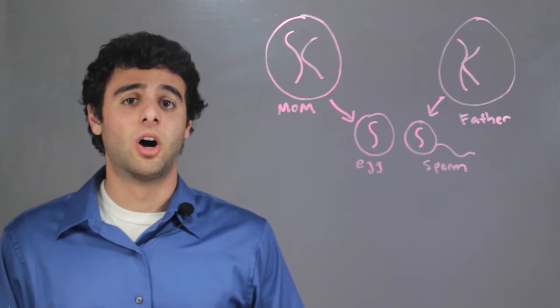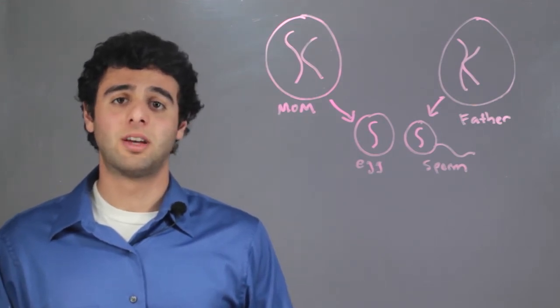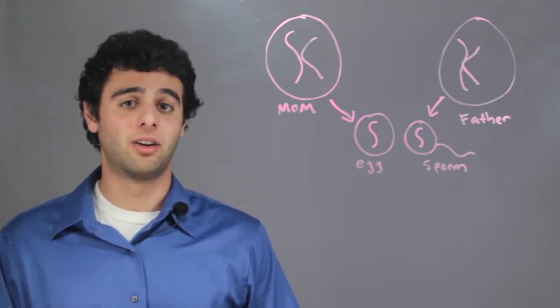These chromosomes are what contain the genes. So by getting one set from the mother and one set from the father, then we are inheriting a gene pair from the mother and the father together.